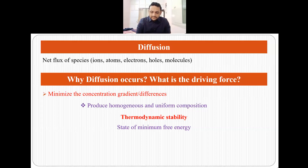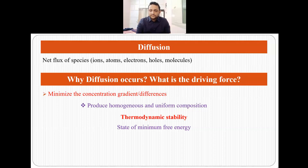Every material wants to be stable, and to be stable the material should have a minimum free energy. To achieve the state of minimum free energy, the material tries to be in a state where it can have homogeneous and uniform distribution of atoms, ions, or molecules. And that is the reason behind diffusion.